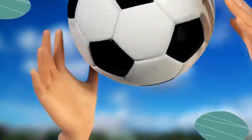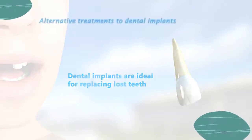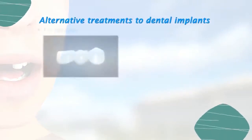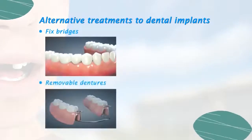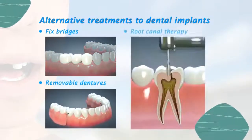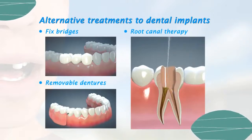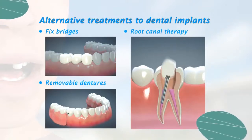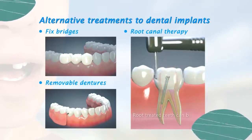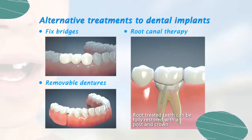Dental implants are ideal for replacing lost teeth, but it is important to know about the alternatives. These may include fixed bridges or removable full and partial dentures. Infected teeth that still have good support within the jawbone may be saved through endodontic therapy, better known as root canal therapy. Root-treated teeth can be fully restored with a post and crown.